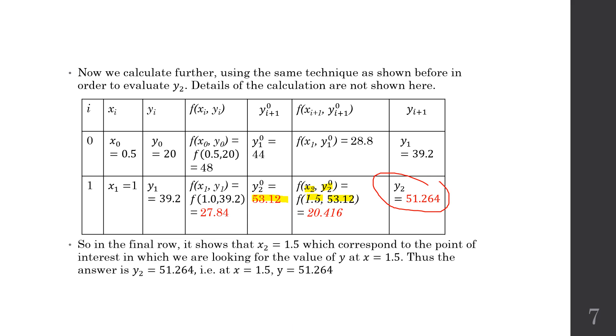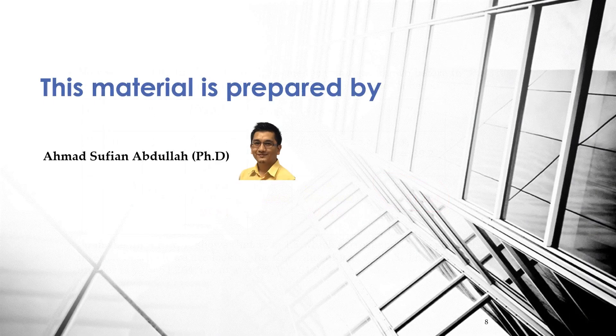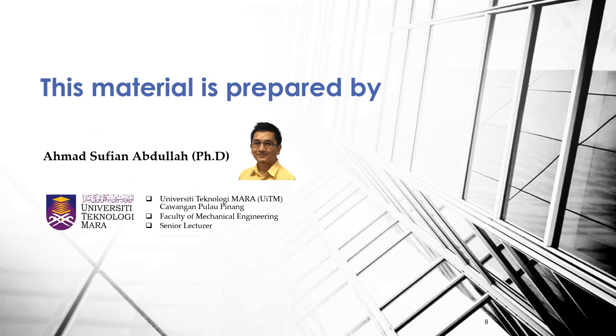So in this final row, it shows that x2 is equal to 1.5, which is the point that we are interested in, and it corresponds to y2. This concludes that y2 is the value we are looking for, the value that the question asked: where at x equal to 1.5, y is equal to 51.264. So that's all for this time. Thank you very much.